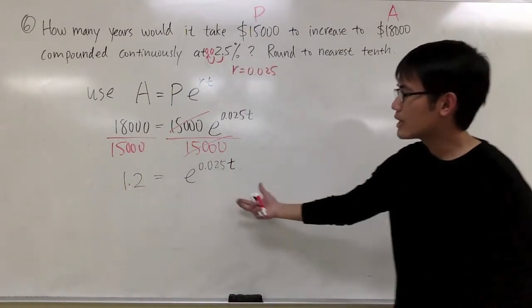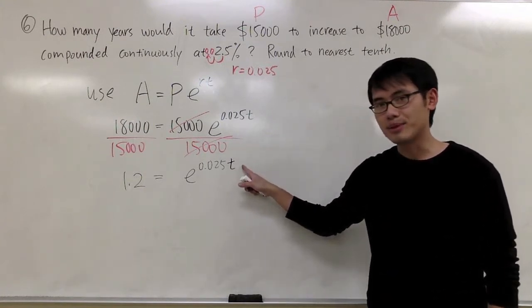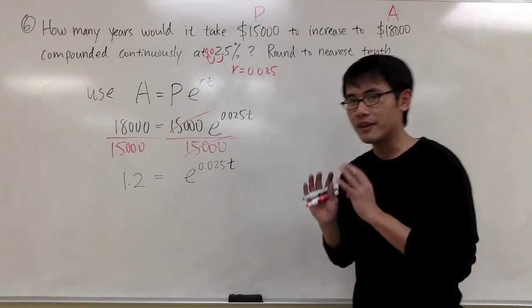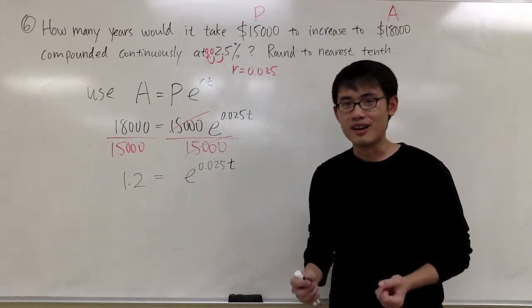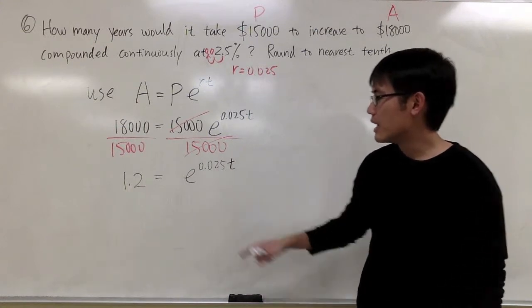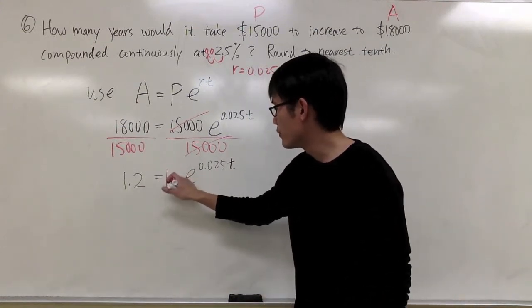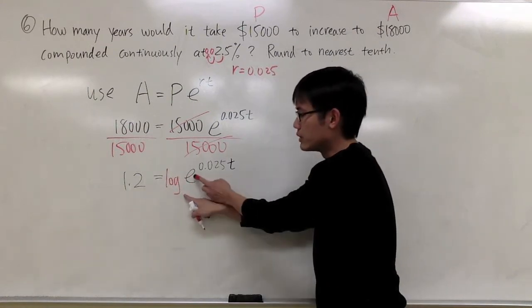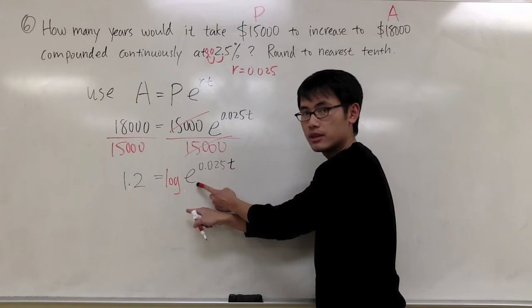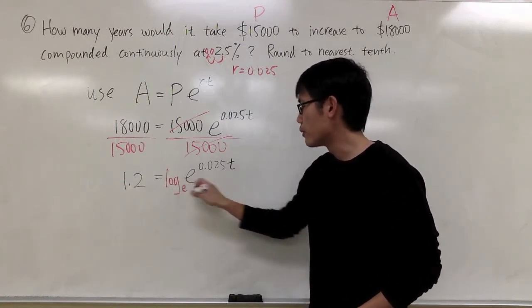And now the question is, how can we get rid of the e? Still, the t is in the exponent, and whenever you have equations that the unknown is in the exponent, you are going to do logs. And in this case, when you want to take log on both sides, you have to take log, and the base of the log has to match with the base that you have for the exponent. So in this case, I will take log base e on both sides.